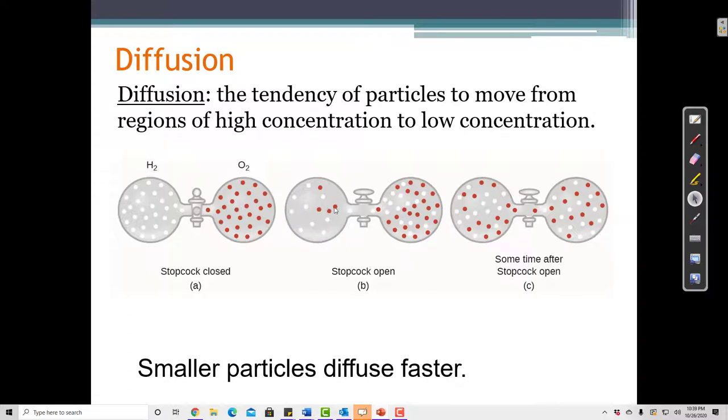We can see from the picture that the white ones moved over much faster than the red ones because the white ones have a smaller molar mass. Smaller molar mass means that they can diffuse faster.